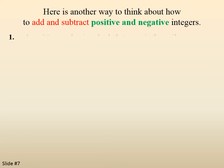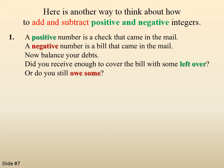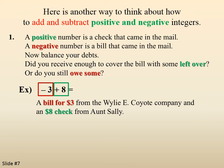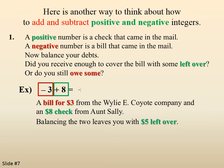Here's another way to think about this. A positive number is a check that came in the mail; a negative number is a bill that came in the mail. Now balance your debts — did you receive enough to cover the bill with some left over, or do you still owe money? Going back to negative 3 plus 8: the negative 3 is a bill for $3 from the Wiley E. Coyote Company, and the positive 8 is an $8 check from Aunt Sally. Balancing the two leaves you with $5 left over, so negative 3 plus 8 is 5.